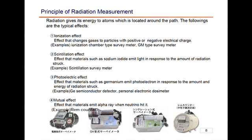Mainly, there are four types. The first one is the ionization effect. With the ionization chamber type survey meter or GM tube type survey meter, radiation passes through the gases, and these gases separate the ions from the electrons. We electronically collect them and measure the volume of the current.